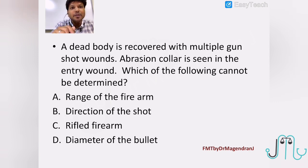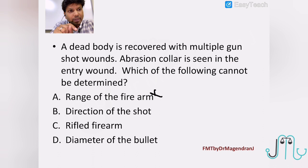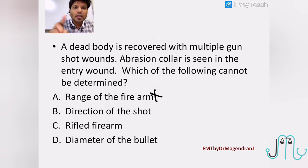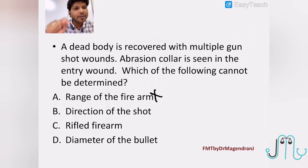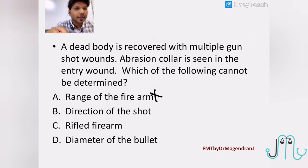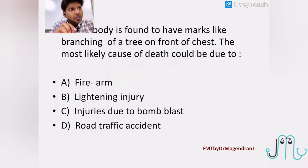A dead body is recovered with multiple gunshot wounds; an abrasion collar is seen in the entry wound — which of the following cannot be determined from the abrasion collar? The range of firearm cannot be determined because the abrasion collar can be seen at many ranges — close, near, and distant — so we cannot differentiate the range based only on the presence of an abrasion collar. We can find out the direction of the shot: if it is a perpendicular bullet entry it should be a circular abrasion collar; if it is oblique, it should be an oval abrasion collar. The presence of an abrasion collar itself indicates it is a rifle firearm, and we can approximately determine the diameter of the bullet.